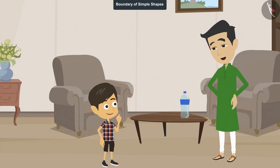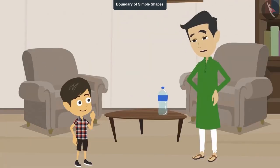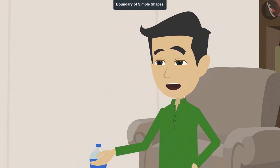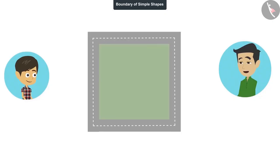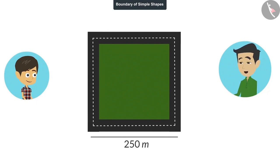It's very easy. You can find it the same way I found out. How? I will tell you. In the park where I go for my walk, the enclosure made for walking is of the shape of a square. One side of its length is 250 meters. Now you tell me, how many rounds do I have to walk to complete 3 kilometers? You mean, I have to find the length of this boundary?